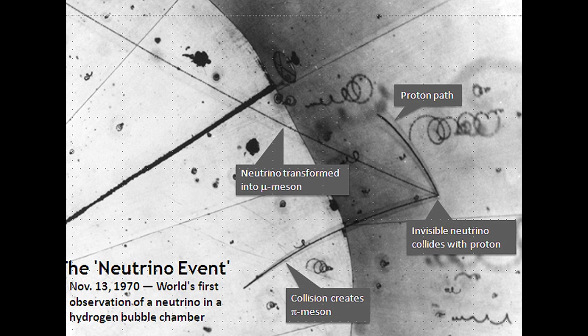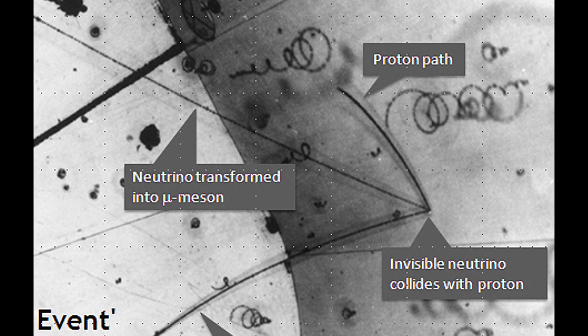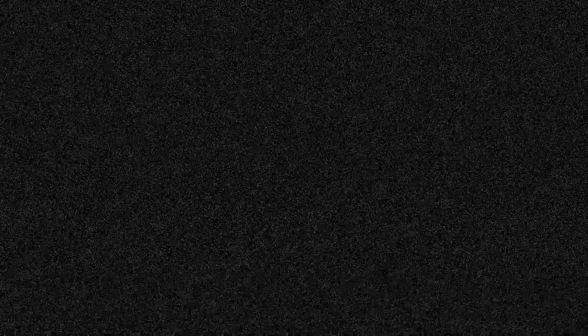Because except gravitons neutron stars also emit neutrinos. In fact the neutrino graviton ratio is 10 to the 33rd to 1. So you'd also need to filter out the neutrino static before being able to detect any gravitons.